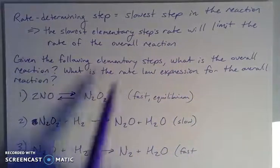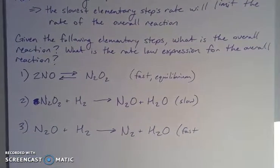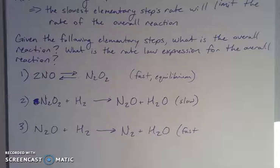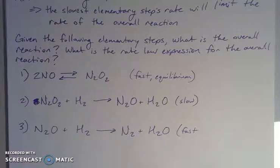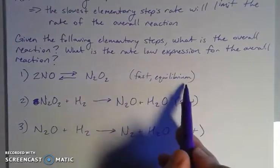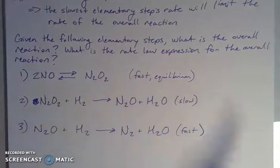So if we have the following elementary steps for a particular reaction, it's asking me to find the overall reaction — just like we did with the first example — and then to figure out the rate law expression for the overall reaction. Let's start by thinking about the rates for each of the steps. We can see we're given some information about each step. The first step is fast and in equilibrium.